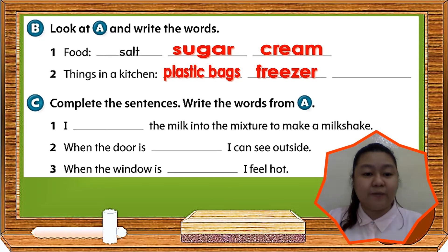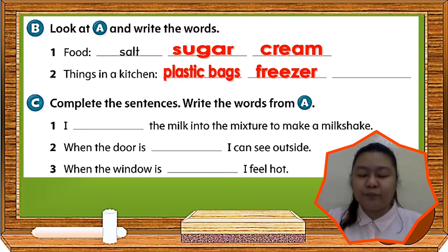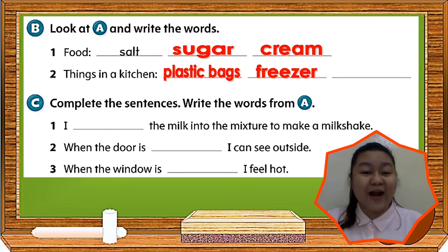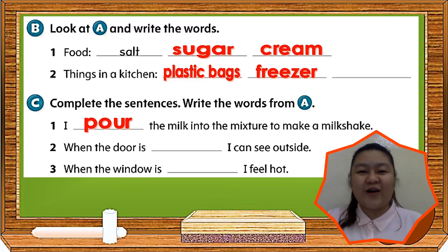Now let's proceed to letter C — Complete the sentences, write the words from A. We will be choosing our answers from our vocabulary words and letter A. Number 1: I blank the milk into the mixture to make a milkshake. The answer is pour — correct. I pour the milk into the mixture to make a milkshake. Number 2: When the door is blank, I can see outside. Correct — when the door is open, I can see outside.